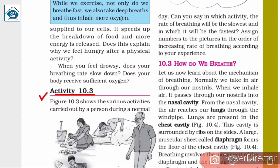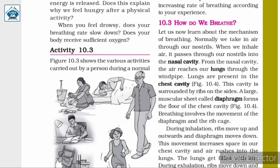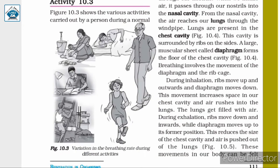In Activity 10.3, we are given a figure showing various activities a person carries out in a normal day. The pictures show: a lady washing clothes, a girl sleeping, a man walking, a boy reading a book, a girl running or doing exercise, and a man climbing up a ladder. From these pictures, we have to observe and think about the breathing rate for each activity.